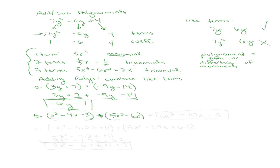The like terms are: the x squareds, the x's, and then negative 3 is by itself. So x squared plus 5x squared gives 6x squared. Convention is we go from the highest degree down. Then negative 4x and negative 6x gives negative 10x. And finally, negative 3 has no pairing, so it's just negative 3.